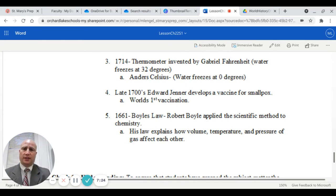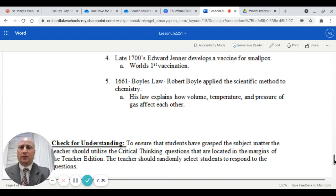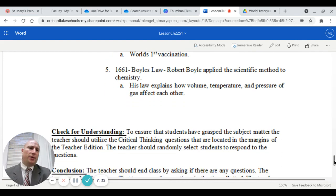In the late 1700s, we have the world's first true vaccination. Edward Jenner develops a vaccine for smallpox. And then in 1661, you have Boyle's law. Robert Boyle applied the scientific method to chemistry. His law basically explains how volume, temperature and pressure of gas affect each other.